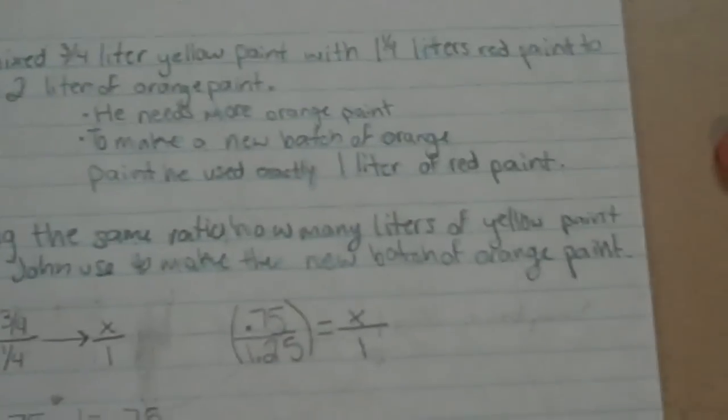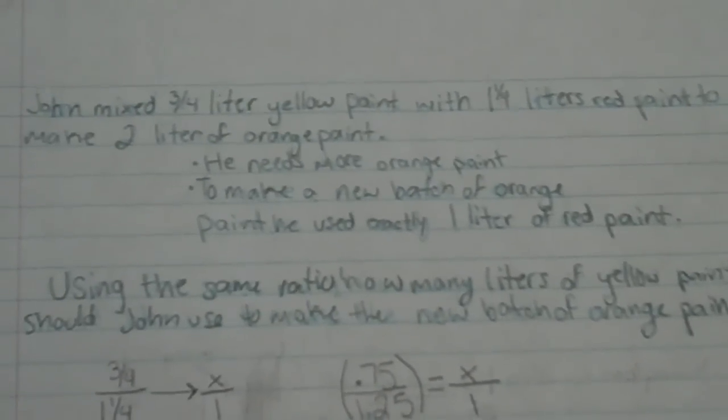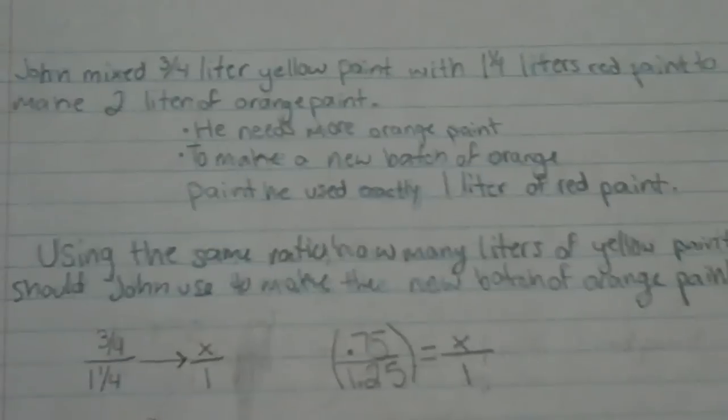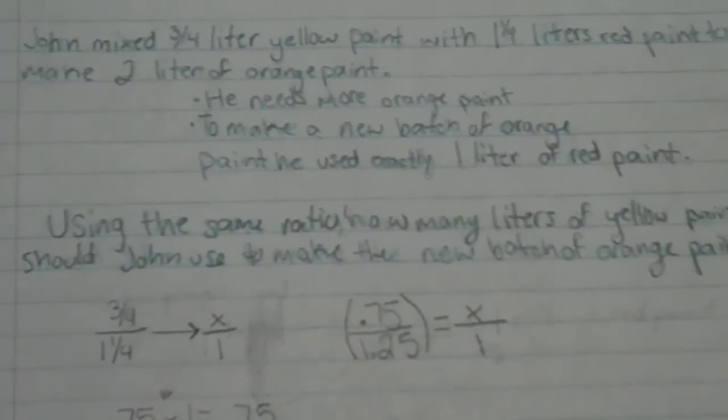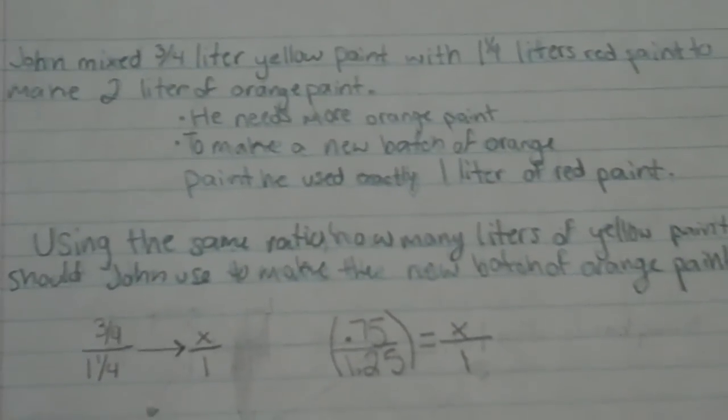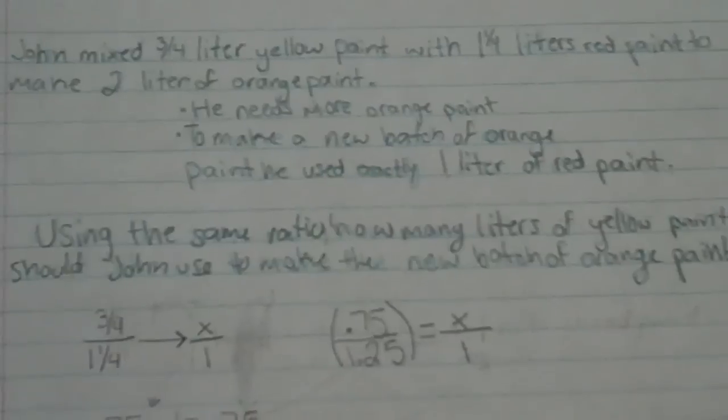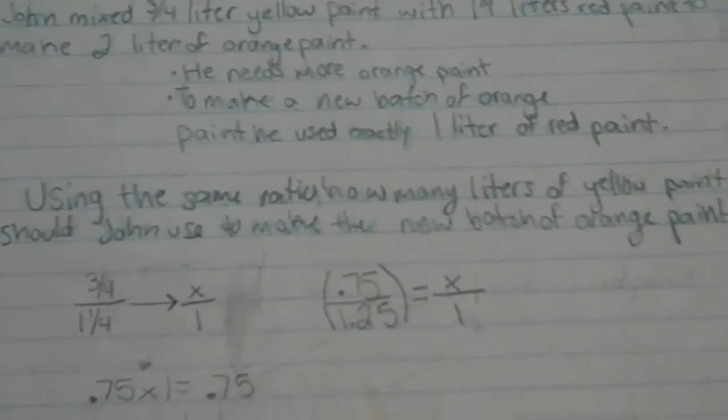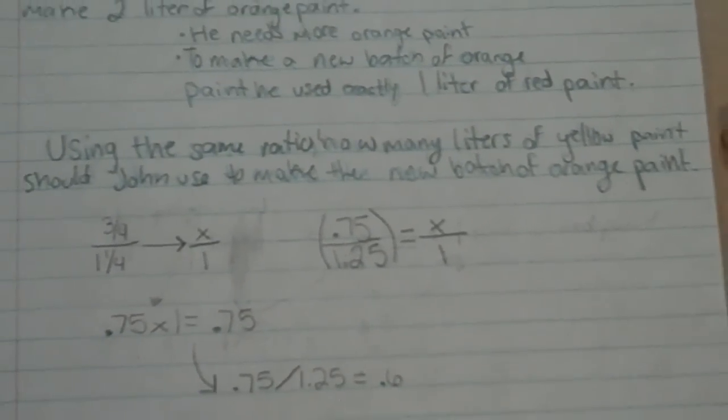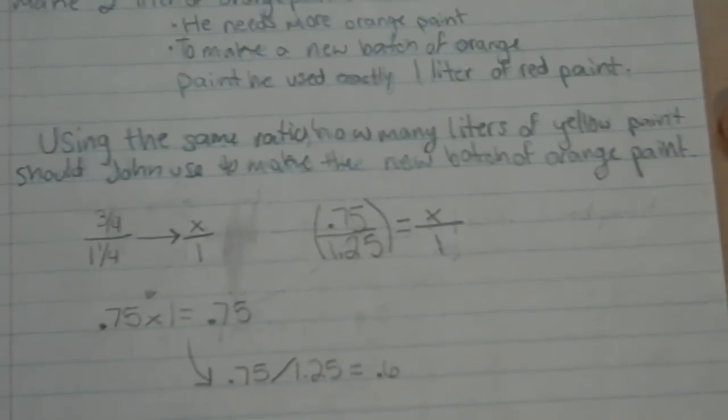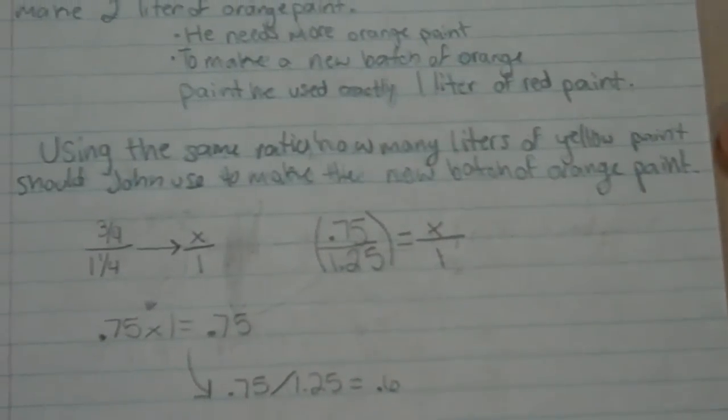Okay, so John mixed 3/4 liter of yellow paint with 1 1/4 liters of red paint to make 2 liters of orange paint. He needs more orange paint. To create a new batch of orange paint, he used exactly 1 liter of red paint. Using the same ratio, how many liters of yellow paint should John use to make the new batch of orange paint?